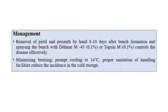For management of cigar end rot: removal of pistil and perianth by hand at 8 to 10 days before bunch formation is recommended, though it is a very laborious process. Spraying with mancozeb M-45 at 0.1 percent or Topsin-M at 0.1 percent can control this disease effectively. Minimizing bruising, maintaining cooling at 14 degrees centigrade, and proper sanitation and handling facilities can also reduce incidence.